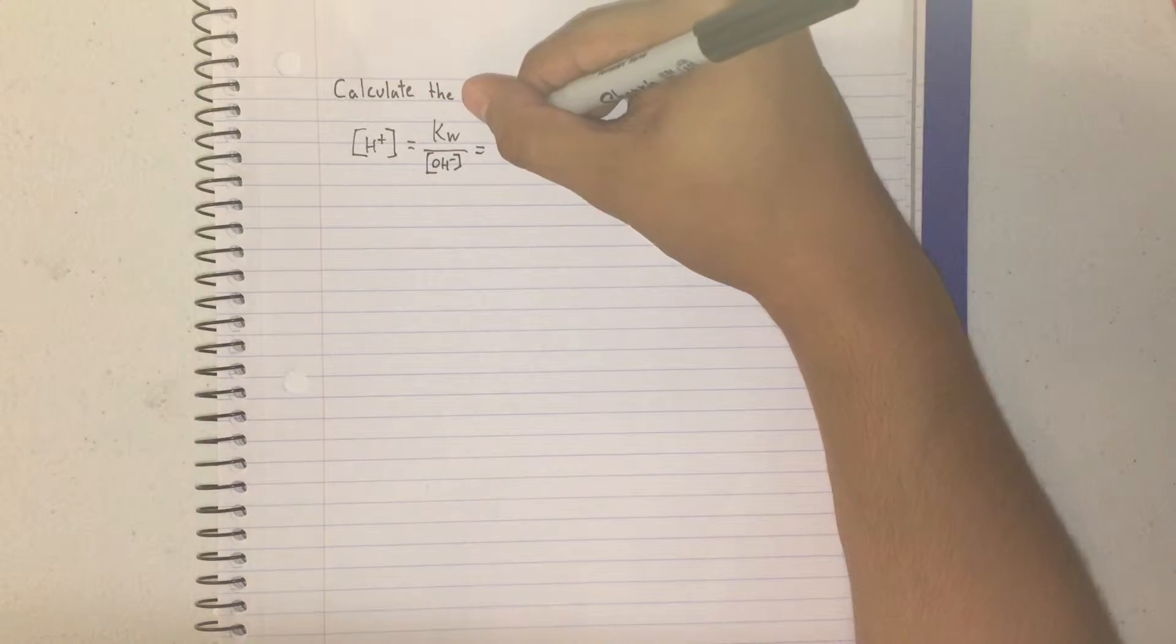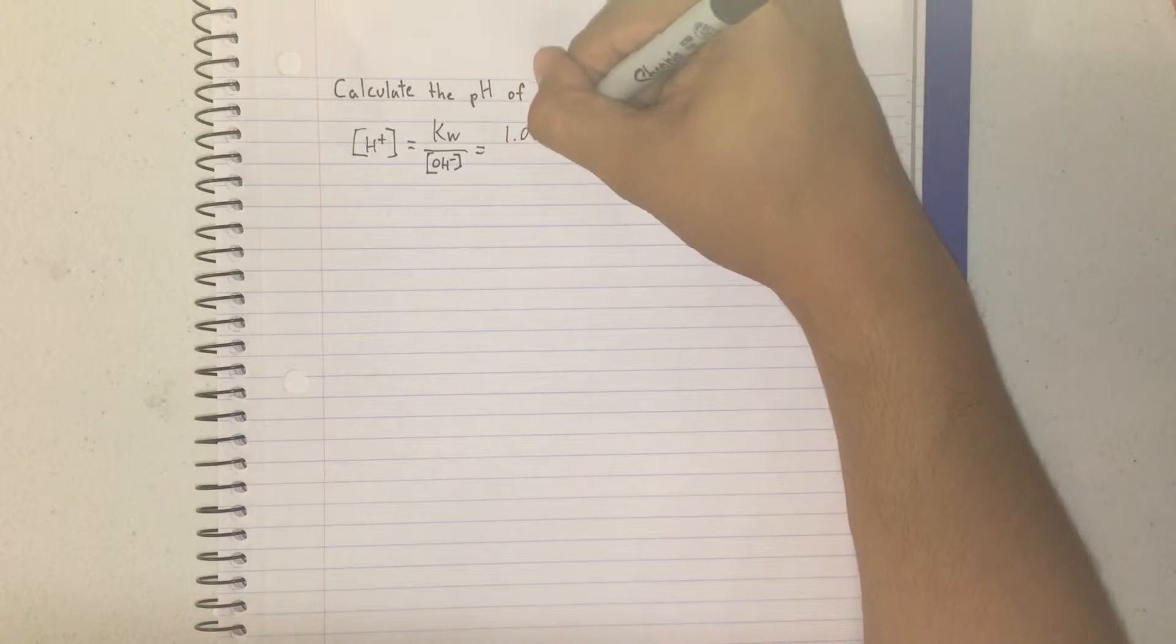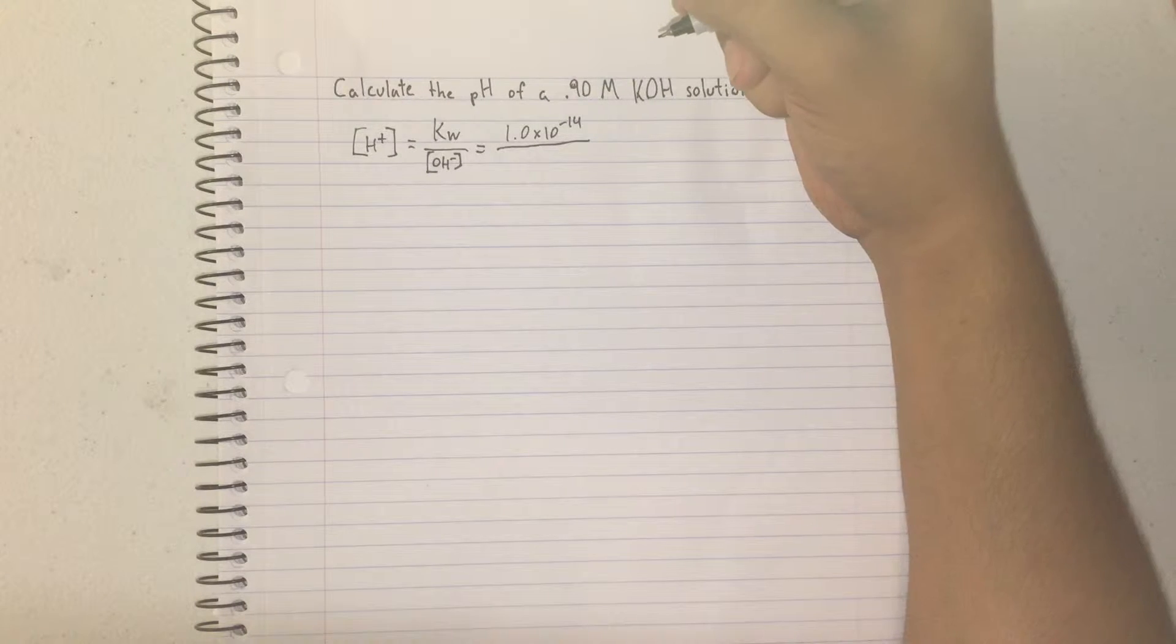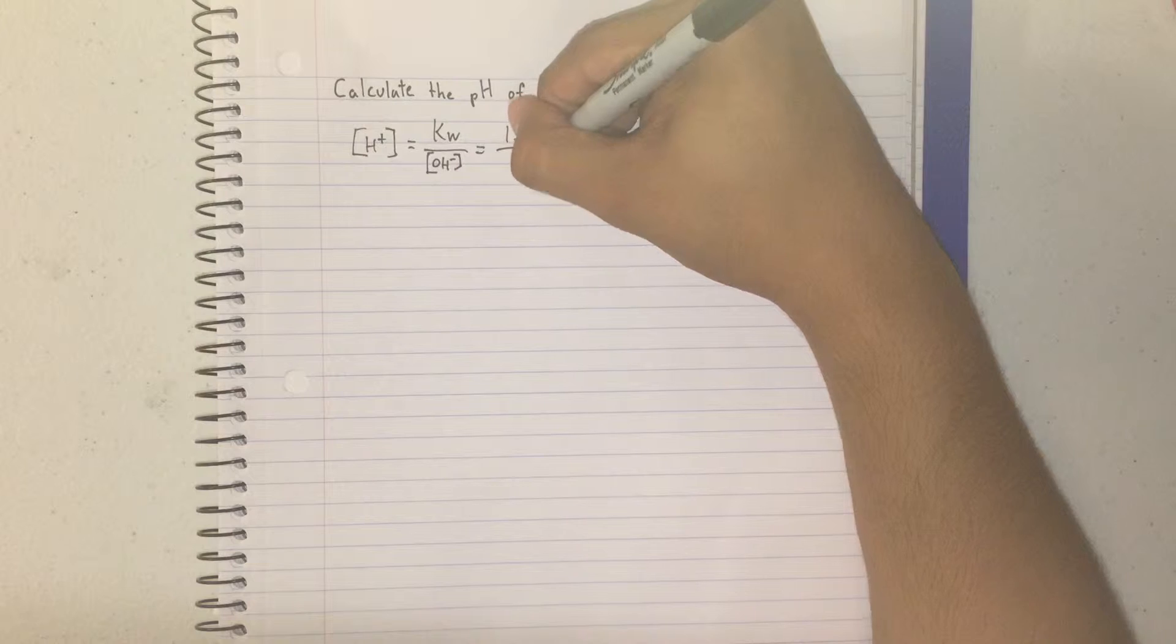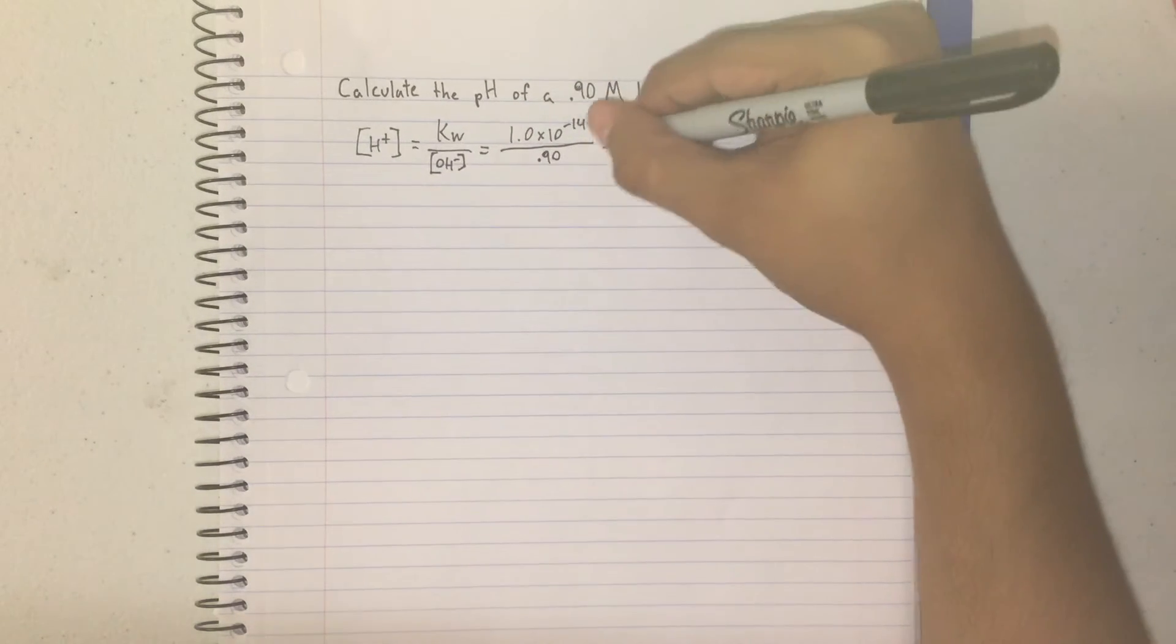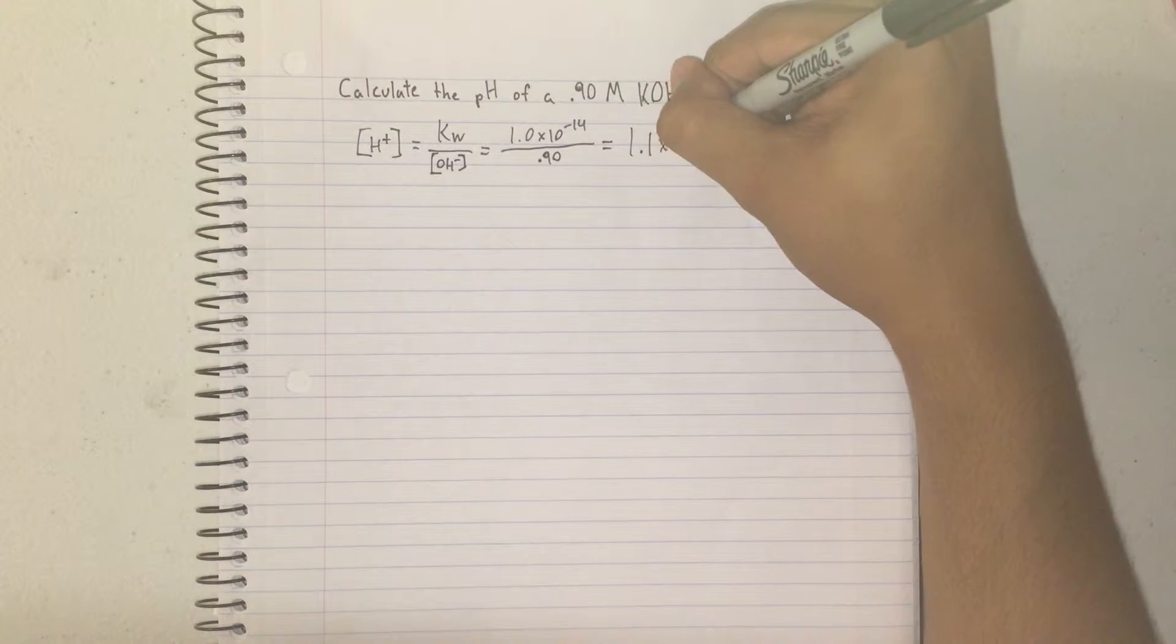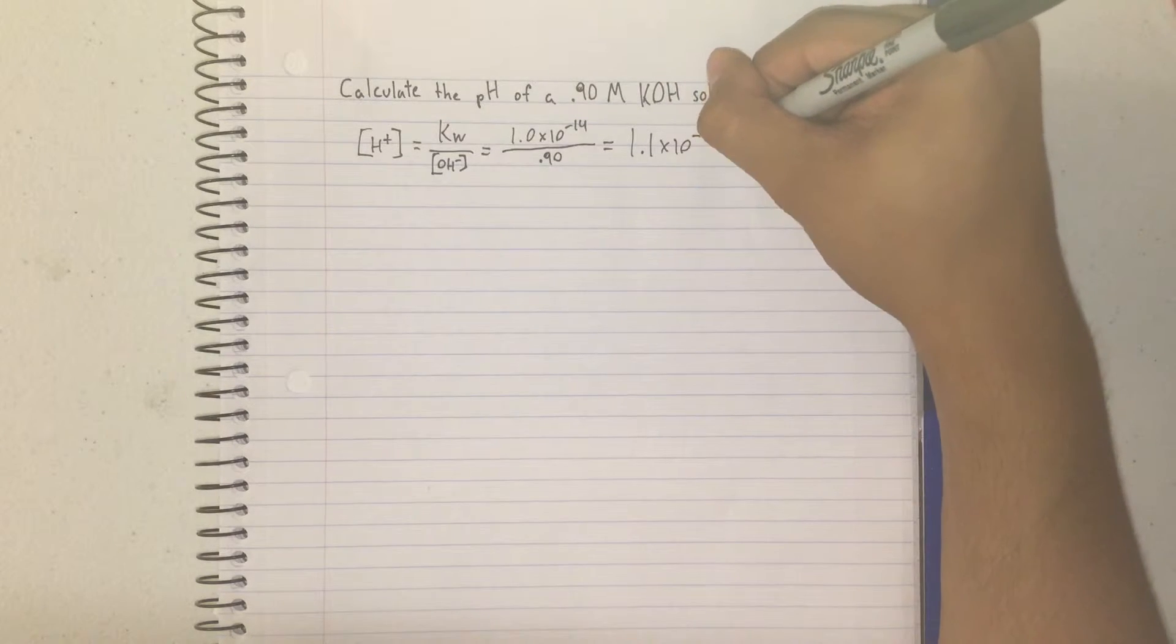So KW is a constant, it's always going to equal 1.0 times 10 to the negative 14, and your OH negative is going to be 0.90. Now this will equal out to 1.1 times 10 to the negative 14 molarity.